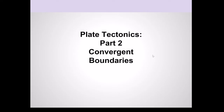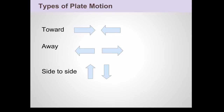Welcome to Section 2 of Plate Tectonics for Geology 1010, Introduction to Geology. This section is on convergent plate boundaries. These are very interesting plate boundaries. They create a number of interesting features — in some cases volcanoes, deep ocean trenches, and some of the tallest mountain ranges in the world. Of the three types of plate motion, convergent boundaries are boundaries where plates are moving toward each other.